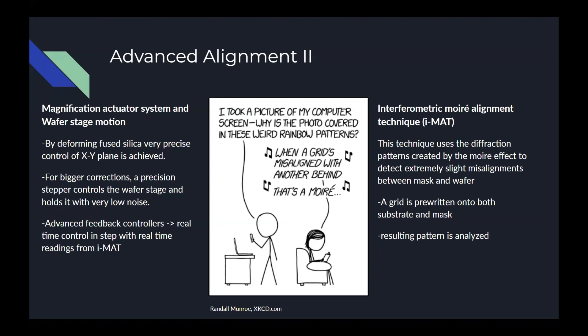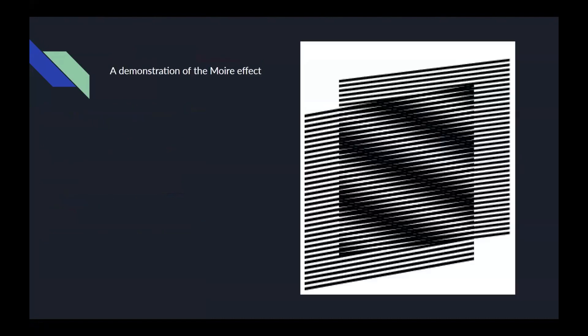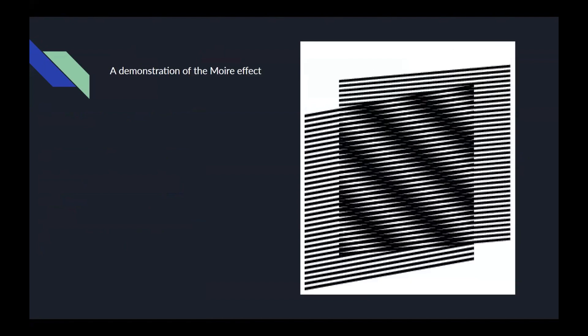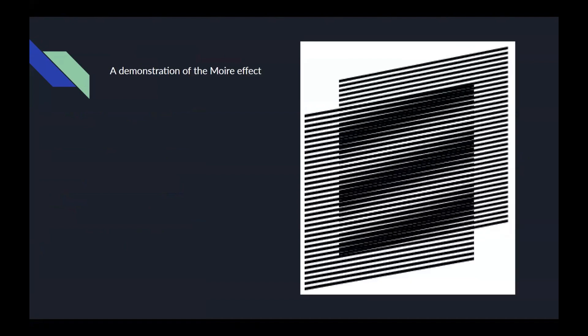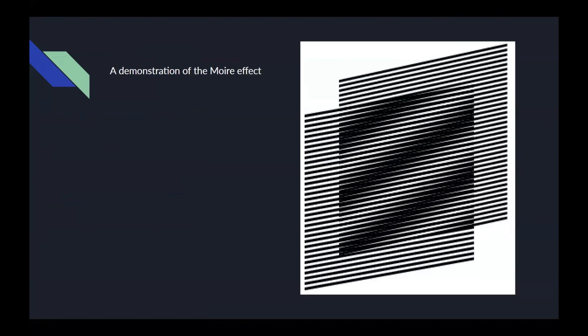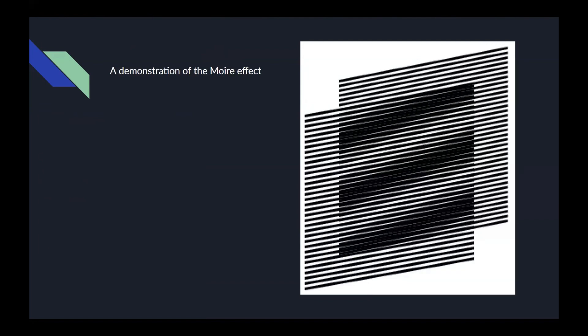Of course, this requires extremely accurate measurements of the alignment. These measurements are accomplished by the interferometric Moiré alignment technique, or IMAT. This involves analysis of the interference patterns created by overlapping grids that are pre-drawn onto the wafer and substrate beforehand. Here you can see a simple demonstration of the Moiré effect — very small changes in the alignment of the grids leads to large changes in the interference pattern. The grids used in IMAT are even more complex and tight, and thus change even faster, enabling extreme precision in alignment readings.